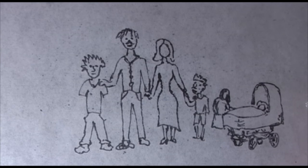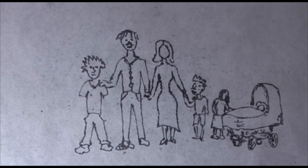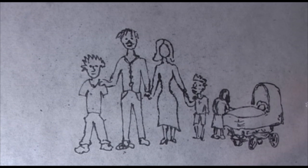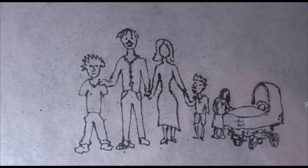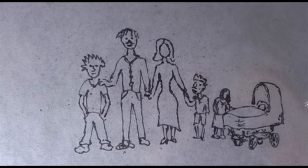Now we can return to the problem of overpopulation. If each human family were dependent only on its own resources, if the children of improvident parents starved to death, or if overbreeding brought its own punishment, then the question of how many children parents would have would not be a matter of public concern.